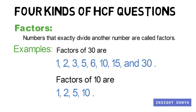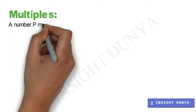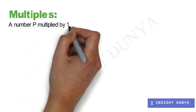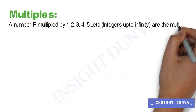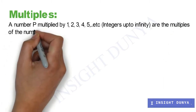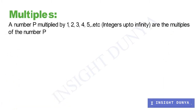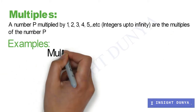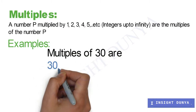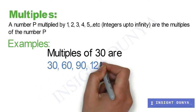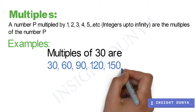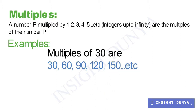Now, what are multiples? A number, let p, multiplied by 1, 2, 3, 4, and so on up to infinity, are the multiples of p. For example, 30 × 1 = 30, 30 × 2 = 60, 30 × 3 = 90. Here, 30, 60, and 90 are multiples of 30.